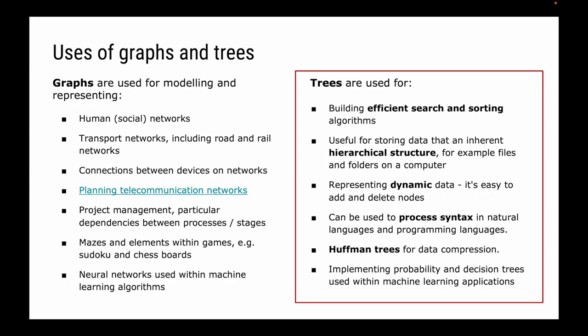Trees are used for building efficient search and sorting algorithms. They're very useful for storing data with an inherent hierarchical structure, such as files and folders on a computer — your C drive is your root, then you have subfolders, and inside those folders you might have other subfolders. Trees are also used for representing dynamic data, processing syntax in natural languages using syntax trees, Huffman trees for data compression, and probability and decision trees within machine learning.